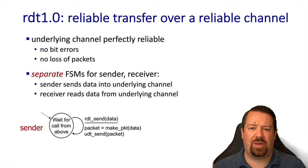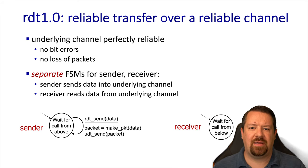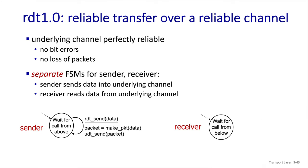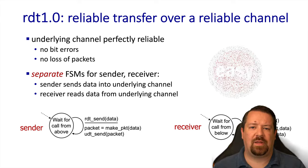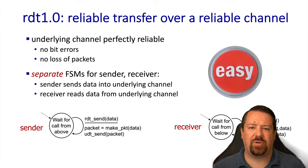It then returns to waiting for the application layer to call it again. On the receiver side, we're also in a wait state, but in this case we're waiting for a call from the underlying network layer. When the RDT receive function is called, we get a packet from the network layer below, remove the header, extract the data, and pass it up to the application. Then return to waiting for another call from the network layer. So the job of the transport protocol in this situation is very simple, but we've used it to see the structure where each end of the connection has its own finite state machine.